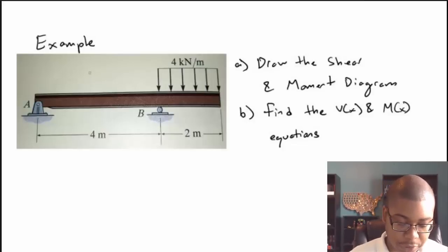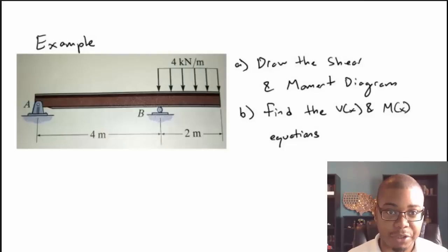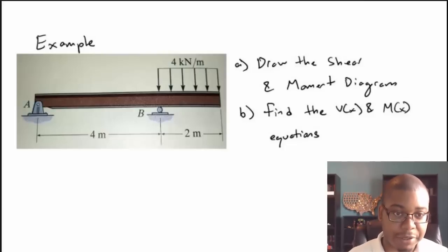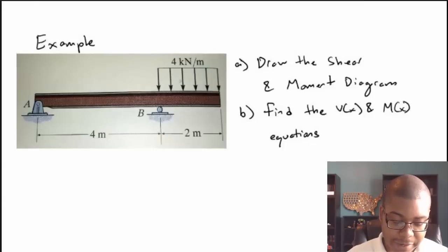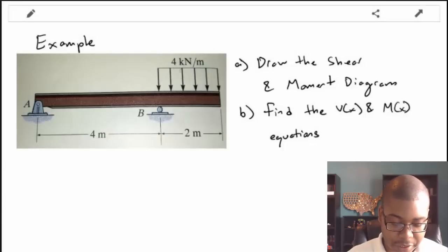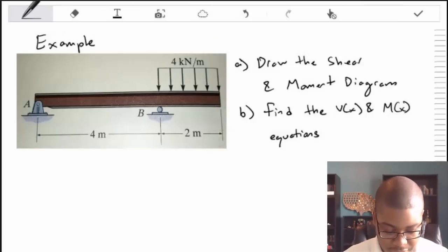Looking at the problem we're given: we have a simple beam with a pin connection at A and a roller at B. It has an external distributed load which has a square shape, directed in the negative direction at a distributed load rate of negative 4 kilonewtons per meter. We also have the dimensional information for this problem.